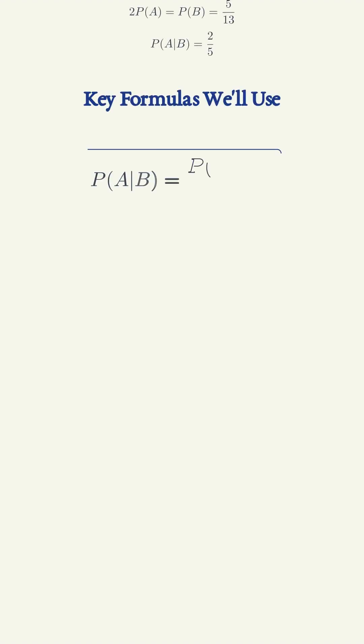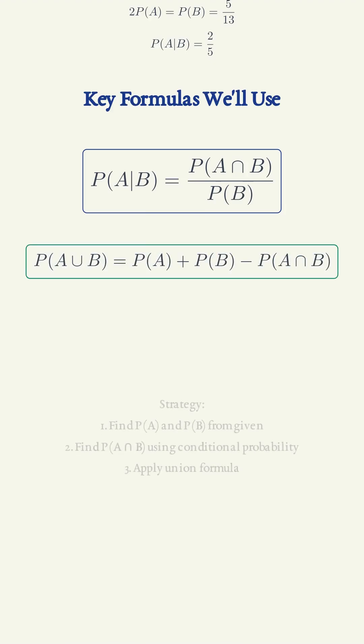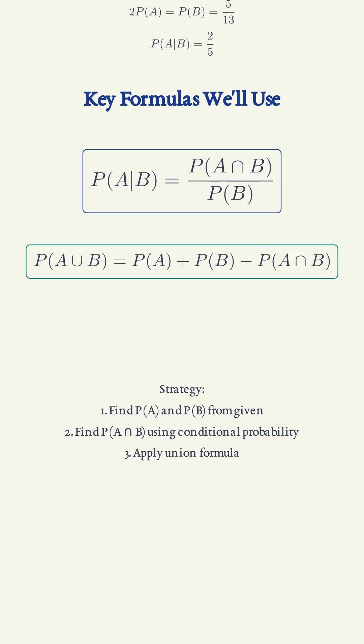Key formulas. P of A given B equals P of A intersection B over P of B. P of A union B equals P of A plus P of B minus P of A intersection B.